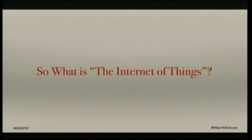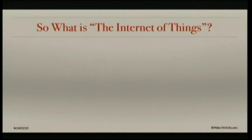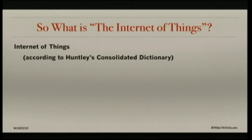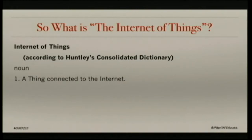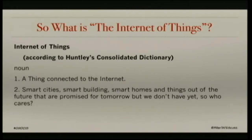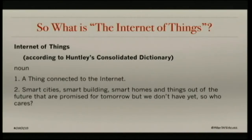So what's the Internet of Things? According to Huntley's Consolidated Dictionary - which is not a real thing - the Internet of Things is a noun, and it's a thing connected to the Internet. Not a very practical definition. The definition that comes up a lot involves smart cities, smart buildings, smart homes, smart cars - all these things connected, out of the future, connected to the Internet, able to do all kinds of wonderful things. But we don't have them yet, so who cares?